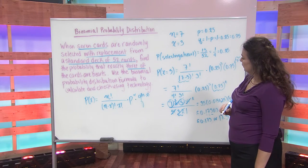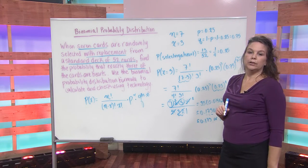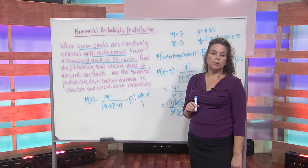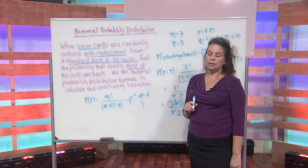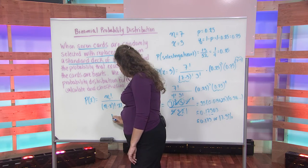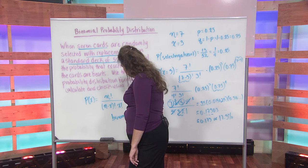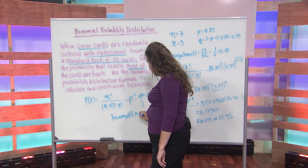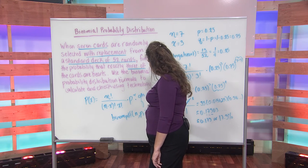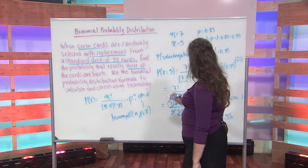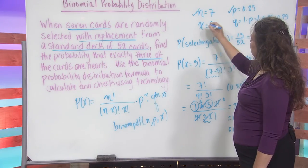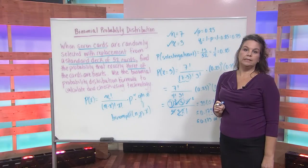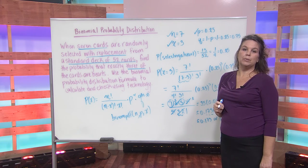You can also do this problem using your calculator. In your calculator, you would select the function from second distribution and select the option binomial PDF. You would enter binomial PDF and make the entries for N, P, and X — which we've listed here. We do have accompanying videos to go along with the binomial probability distribution formula if you need some help with technology.